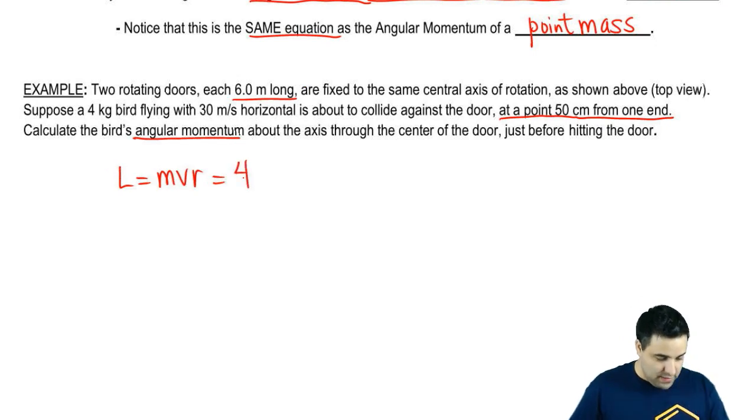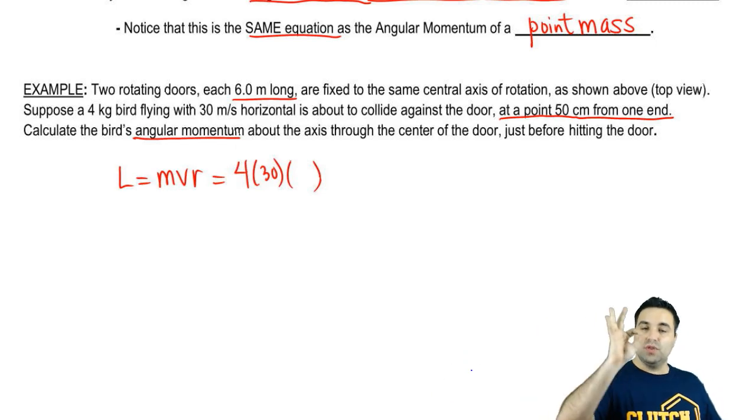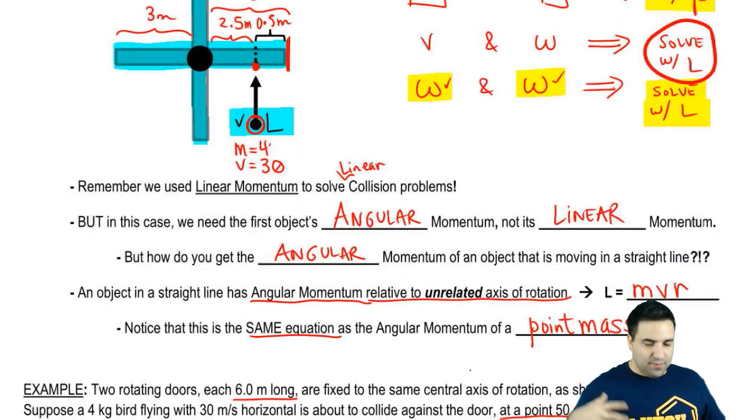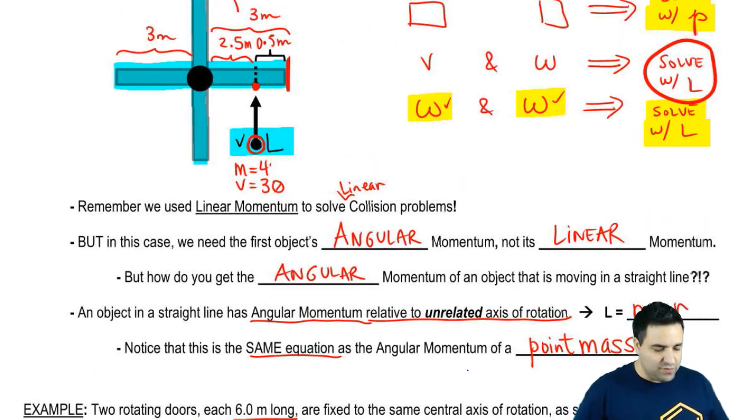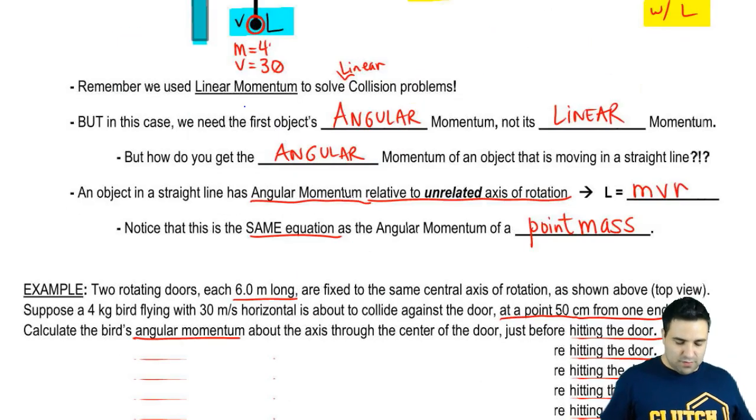Mass is 4. V is 30. Those are just plugged into the equation. And R is the distance from the axis of rotation to the point where it will touch. Just like a bunch of the other little R's that we've used, it's just a distance from the axis of rotation to the point of collision. That distance is 2.5.